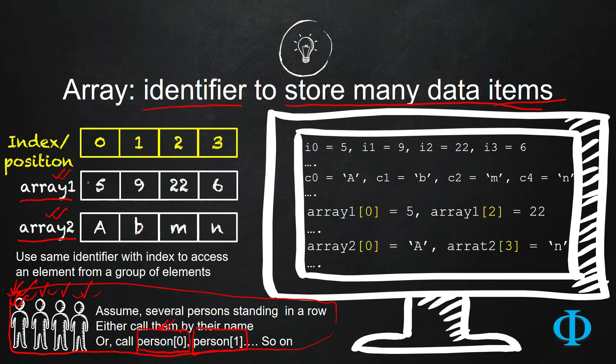And now, in order to access each of the persons in the row, or in our programming context, access each of the data items stored in these arrays, what you can do is just like person then 0, you can identify them with an index. So the element at array1 index 0 is 5, then the element at array1 at index 1 is 9. So element at array2 index 2 is M.